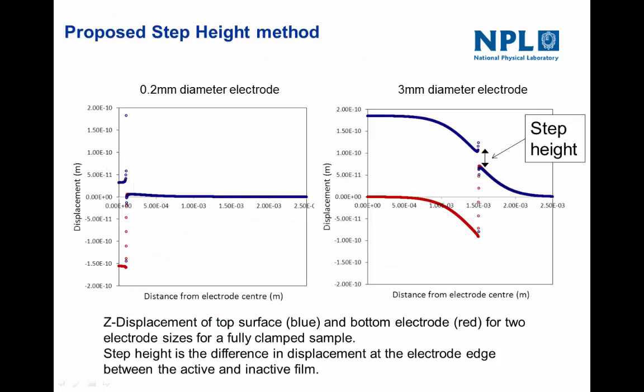Looking more closely at the simulations: for a 0.2 millimeter diameter electrode and a 3 millimeter diameter electrode on a fully clamped sample, we've plotted the displacement across the top surface (blue line) and the displacement of the bottom electrode (red line). Taking the center displacement gives two very different results. However, there are two constants in these graphs: one is the distance between the red and blue lines — the change in thickness — which equals the fully clamped piezoelectric coefficient for both the 3 millimeter and 0.2 millimeter diameter. The other constant is the step height: the change in height between the active region on the left and the inactive region on the right, which is the same for both electrode sizes.